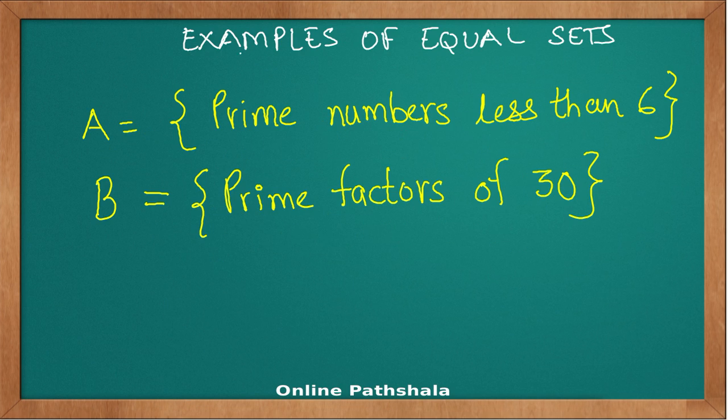Let us look at another example of equal sets. Let us say that we have a set A which has prime numbers that are less than 6, and we have a set B which has prime factors of 30. Are these equal sets? Let us try to find out.